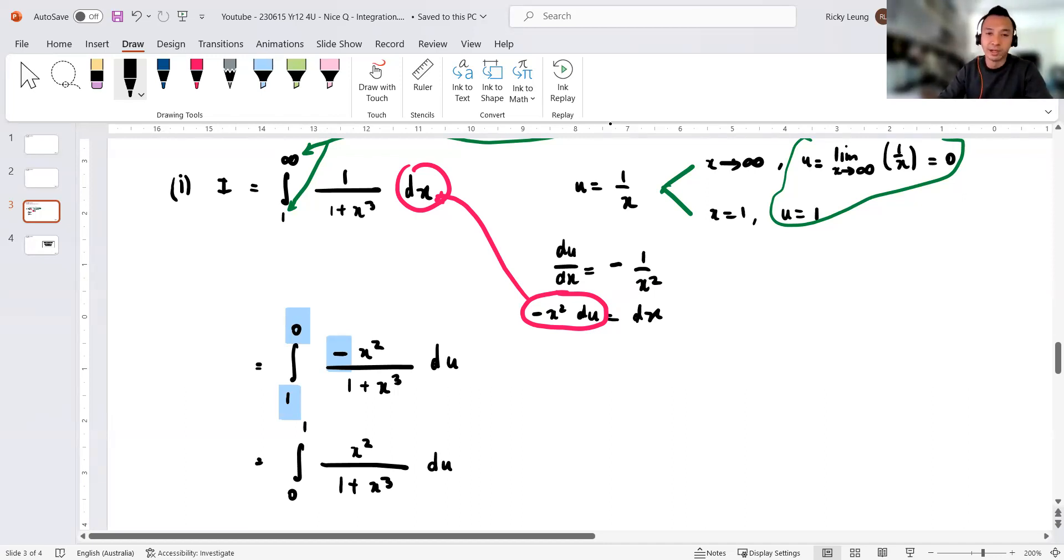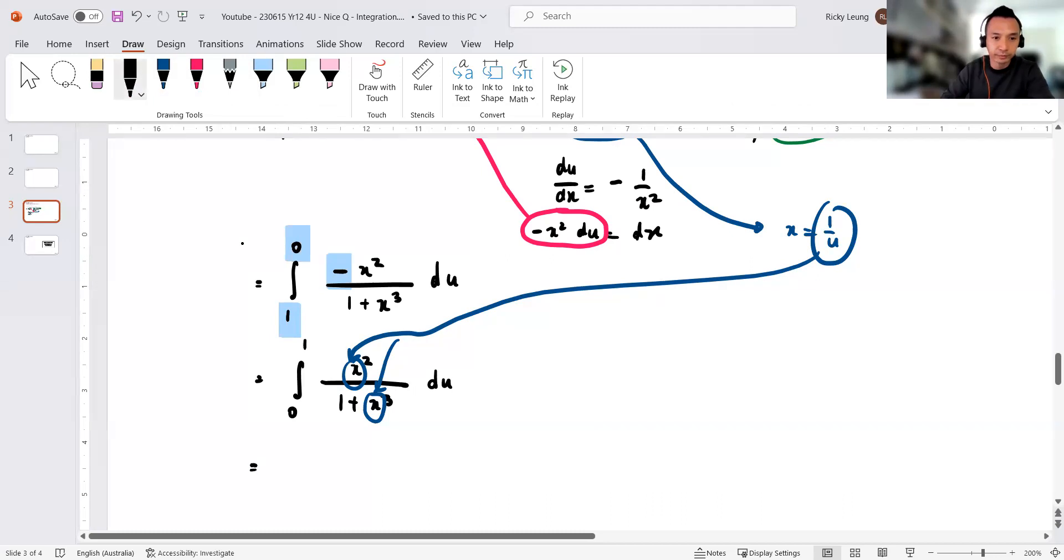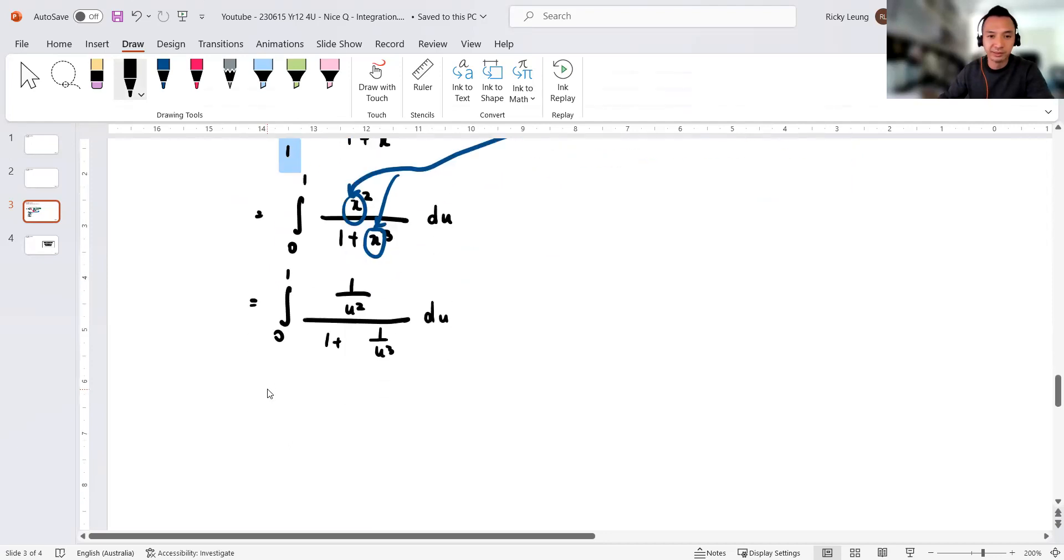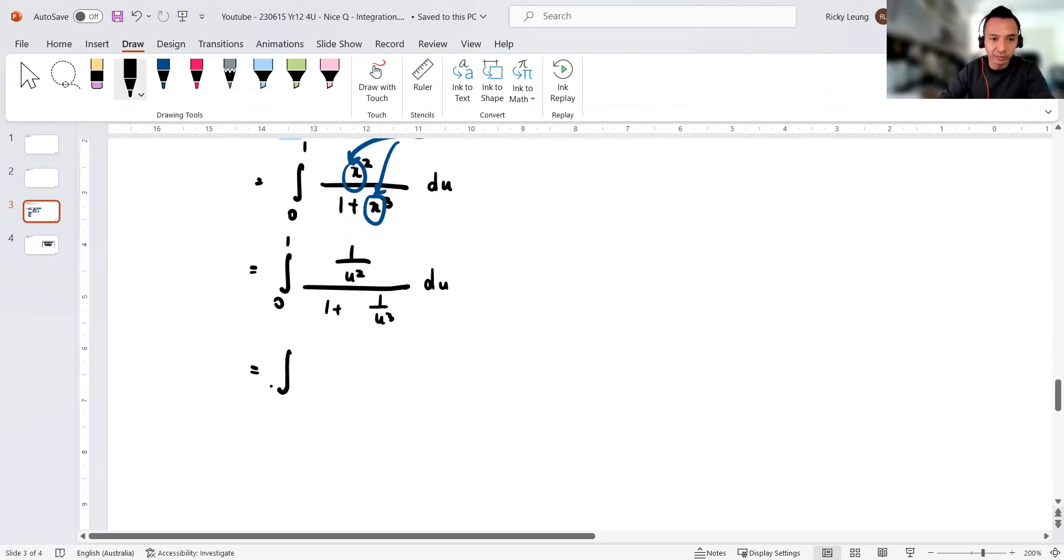du. Now there's two ways to simplify. I need everything in terms of u, right? Right now I've got x's. You can either simplify now or come up here, maybe make x a subject as 1/u and sub that both into there and there as well. Let's see what we get. We get 1/u squared over 1 plus 1/u cubed du.